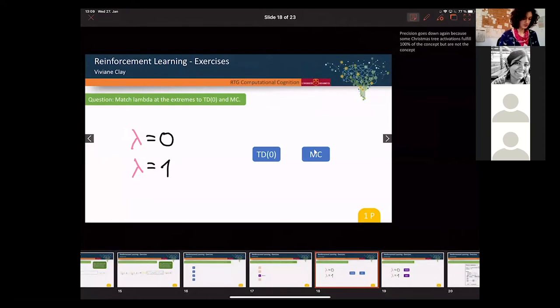So one is, all of the, all of them are weighted with 0. And the other one is, all of them are just added up together without any weighting or weighting of 1. And yeah, this is the exercise. So try to match TD 0 and Monte Carlo to the two different lambdas.